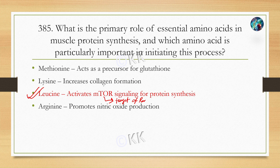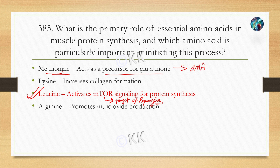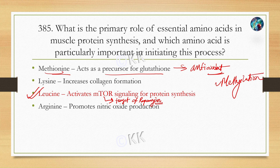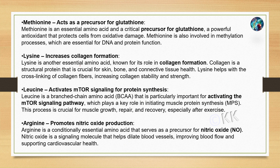Athletes, bodybuilders, and people generally take branched-chain amino acid supplements which contain a high amount of leucine. Additionally, methionine acts as a precursor for glutathione, a powerful antioxidant that protects cells from oxidative damage. Methionine is also involved in methylation processes essential for DNA and protein functions. Lysine increases collagen formation — collagen is the most abundant protein in our body, crucial for skin, bone, and connective tissue health. Lysine helps with cross-linking of collagen fibers, increasing collagen stability and strength.